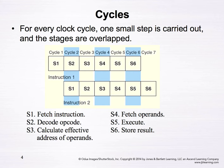Here's the graphical representation of the pipeline method. For every clock cycle, one small step is carried out and the stages are overlapped. This overlap makes the pipeline improve the throughput of the system.